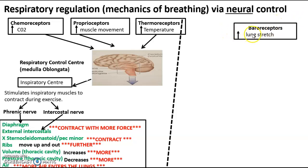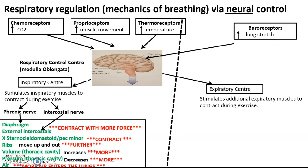Once that has happened, the baroreceptors send that information into the respiratory control centre, which then sends the information to our new centre, which is the expiratory centre. The expiratory centre has a sole responsibility of stimulating the additional expiratory muscles to contract during exercise. There's no nerve required for this one — it goes straight into our mechanics of breathing for expiration, but of course we are talking about exercise here, so it's an exaggerated version of our mechanics of breathing for expiration during exercise.